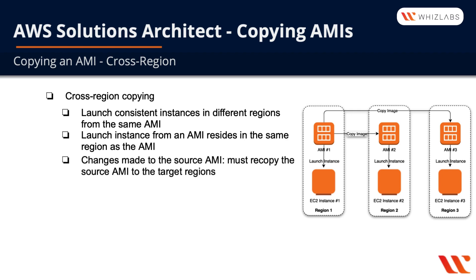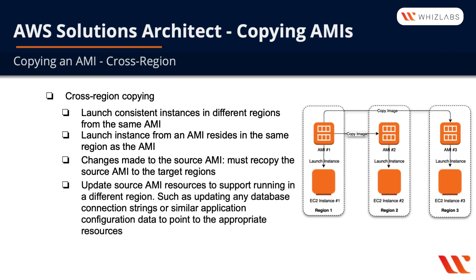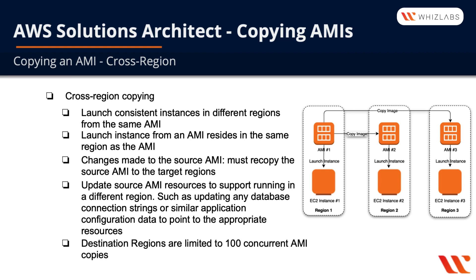If you make changes to the source AMI, you must recopy the source AMI to the target regions; otherwise, instances launched in other regions will differ from your source. You also need to update your source AMI resources to support running in a different region, such as database connection strings or other application configurations — those need to point to the appropriate resources in the other regions. Destination regions are limited to 100 concurrent AMI copies.